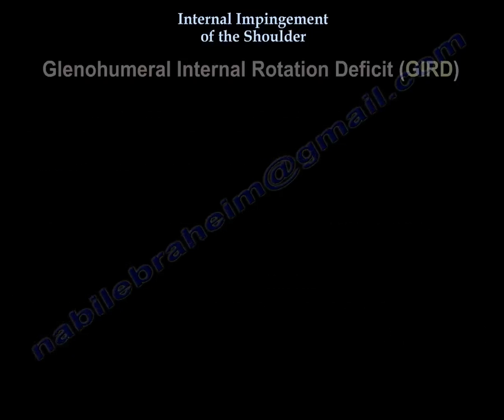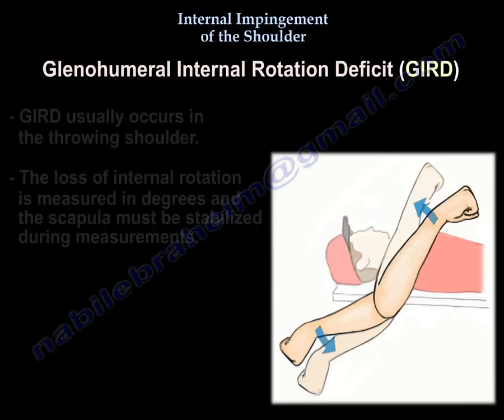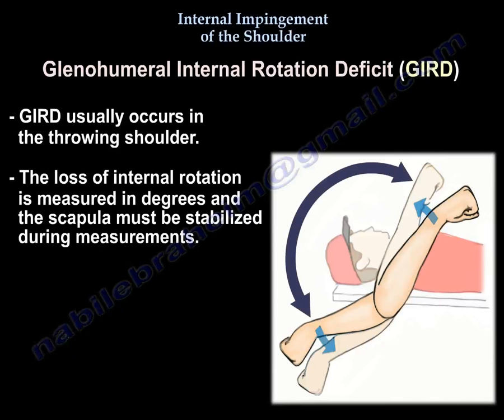GIRD usually occurs in the throwing shoulder. The loss of internal rotation is measured in degrees, and the scapula must be stabilized during measurements.